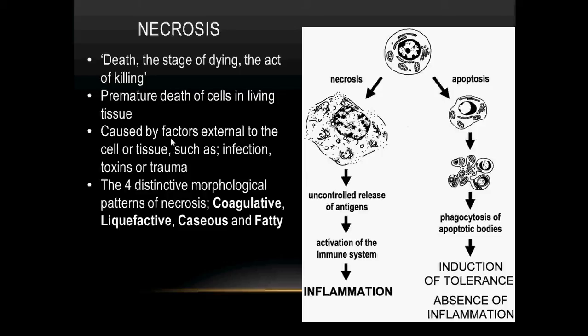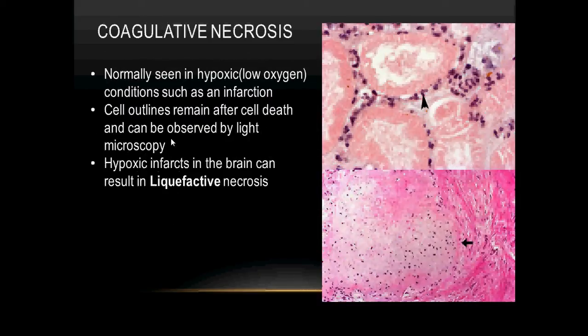Coagulative necrosis is normally present in hypoxic or low-oxygen conditions, such as an infarction. In coagulative necrosis, the cellular outlines or architecture remain even after the cell's death and can be observed under light microscopy. Hypoxic infarcts in the brain can also result in liquefactive necrosis.